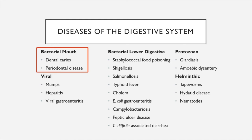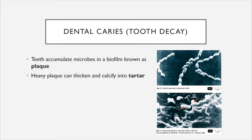We're going to get started by looking at bacterial diseases of the mouth, of which there are two: dental caries and periodontal disease. Dental caries is the medical term for tooth decay. Tooth decay occurs when your teeth accumulate microbes in a biofilm colloquially called plaque. Unlike your mucous membranes or skin, which have access to the immune system and are constantly sloughing cells, your teeth do not have these defense mechanisms and so they can easily accumulate a biofilm.